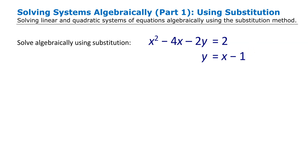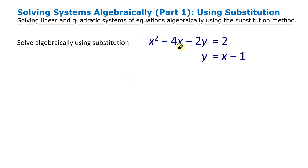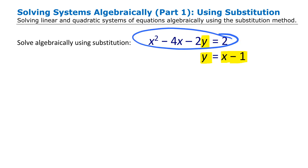In our first example, we are going to use one equation as a way of replacing y in the other equation, giving us a new equation that only has x in it. The reason I'm choosing the bottom equation is because y is already isolated there. This means I can replace y with x minus 1 in the other equation.